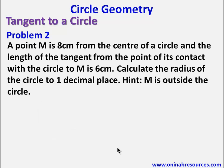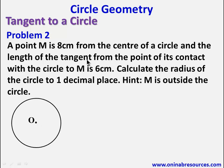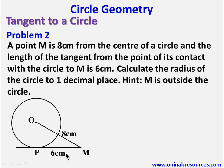We go ahead to problem 2. A point M is 8 centimeters from the center of a circle, and the length of the tangent from its point of contact with the circle to M is 6 centimeters. Calculate the radius of the circle to 1 decimal place. Hint: M is outside the circle. We draw a circle with center O and a tangent to the circle at point P. Since M is outside the circle, we locate M such that OM is 8 centimeters. PM is 6 centimeters.